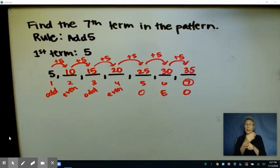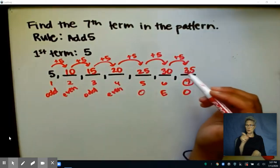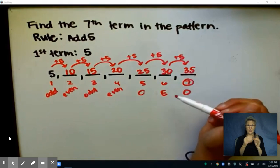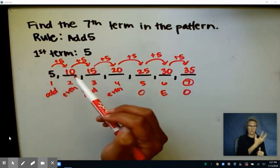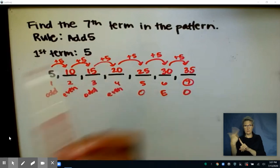And as we were finding our terms here, we noticed that we could be skip counting by 5s because these terms are all multiples of 5 since our first term is 5, and then we add 5 to every term that comes after it.